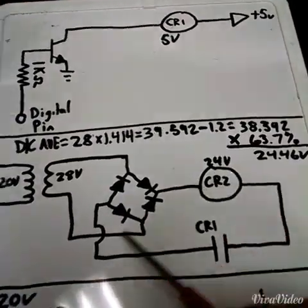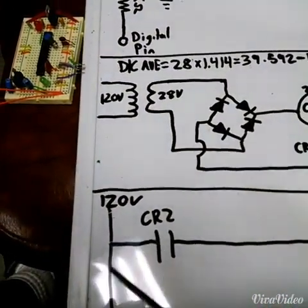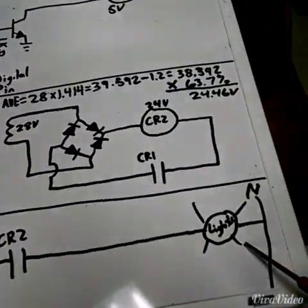So then once CR2 fires its contacts will close here passing 120 volts to the lights.